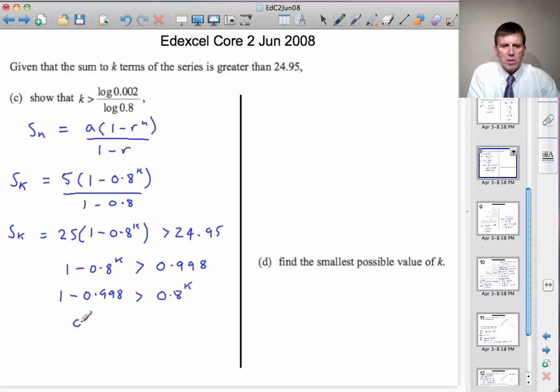So that gives 0.002 is greater than 0.8 to the k.